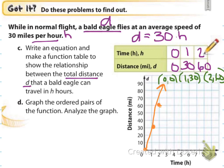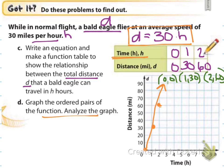For C, write the equation and make a function table showing the relationship between total distance D and hours H for the bald eagle. Distance equals 30 times each hour, so D equals 30H. Using default values 0, 1, 2: zero hours gives zero miles; one hour gives 30 miles; two hours gives 60 miles. Graphing these three points gives a straight line — a linear equation. To analyze the graph: every hour the bald eagle flies 30 miles.